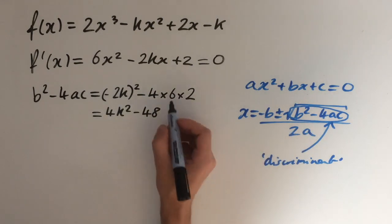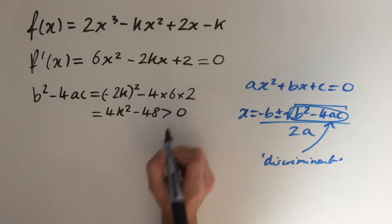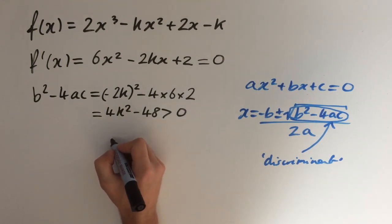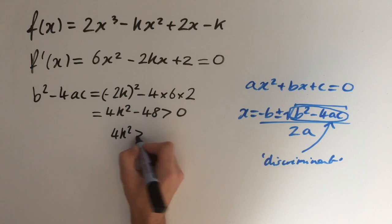And as we said before, we want this to be greater than zero. Simplifying, we get 4k² > 48. And dividing by 4, we get k² > 12.